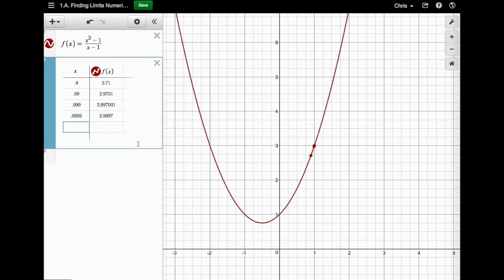So let's do something like 1.1 and then 1.01. Now again, you can see these points pop up. This 1.1 pops up and this 1.01 pops up. And you can see it's going to get closer and closer to three. So I'm going to do 1.001.